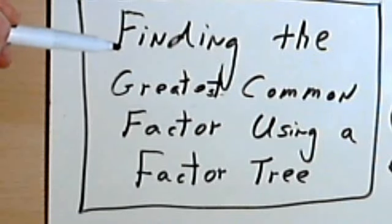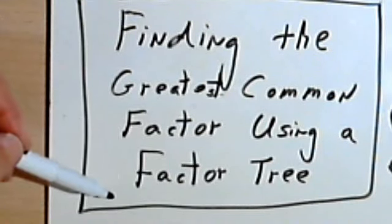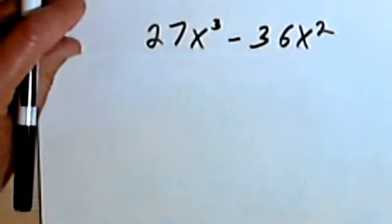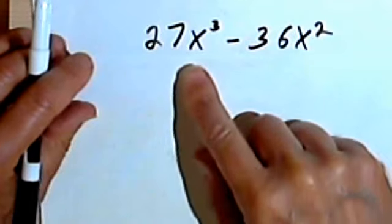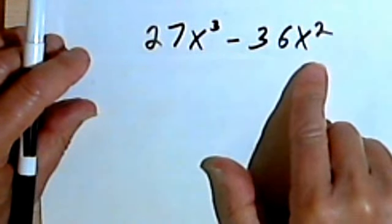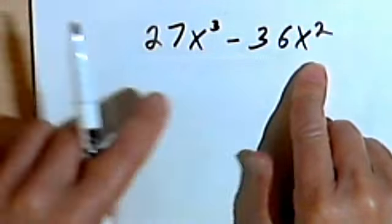This video is going to be about finding the greatest common factor using a factor tree. So let's look at an example. Over here I've got 27x to the third minus 36x squared, and I want to factor out the greatest common factor in this binomial.